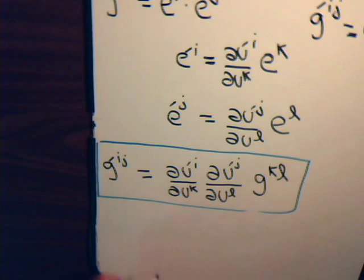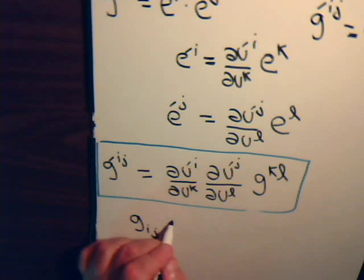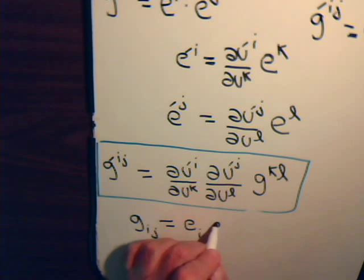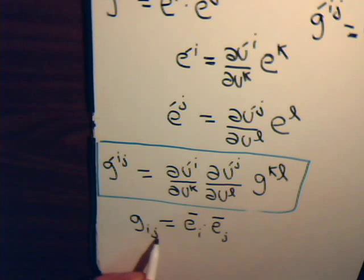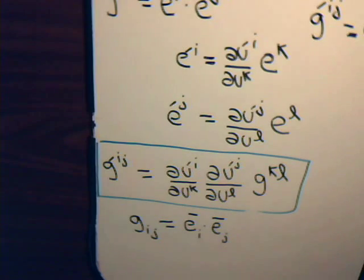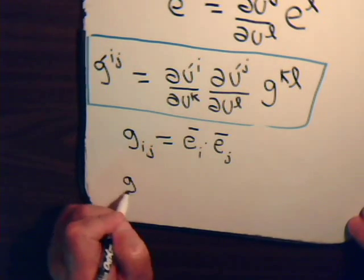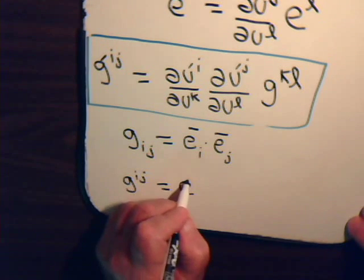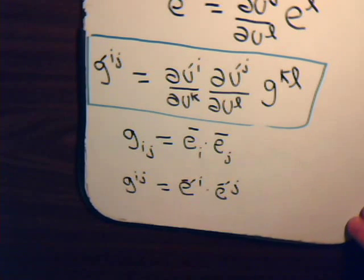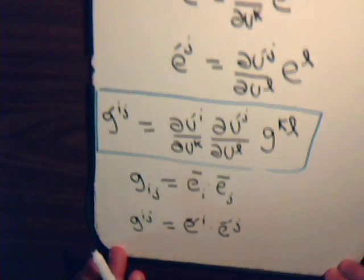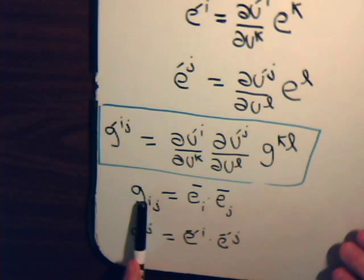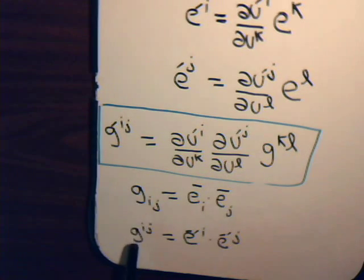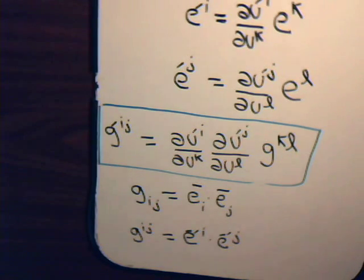So the metric tensors with lowercase labels transform as covariant tensors, and the ones with superscripts transform as contravariant tensors — these two different forms of expressing the metric tensor. That's all for this video. In the next video we're going to introduce the subject of Christoffel symbols, so come back and join us for that.